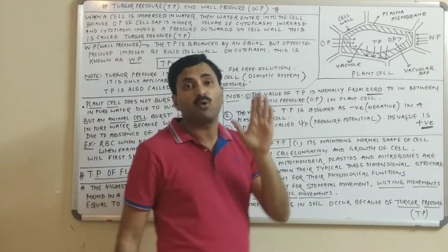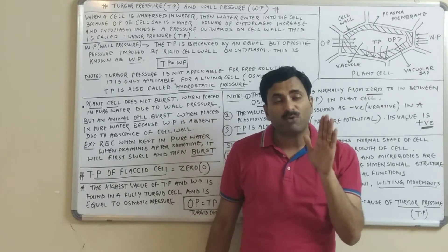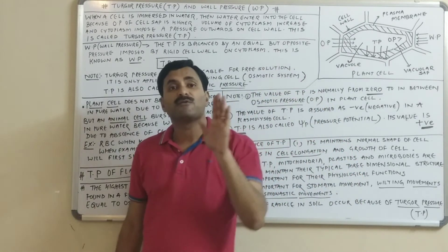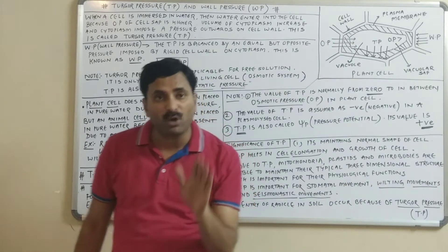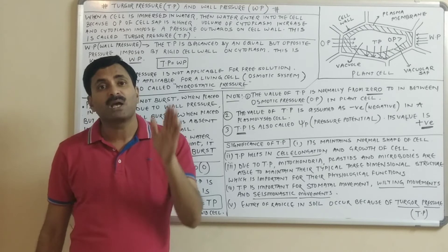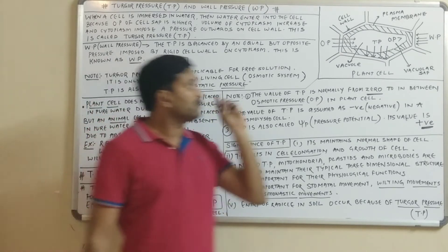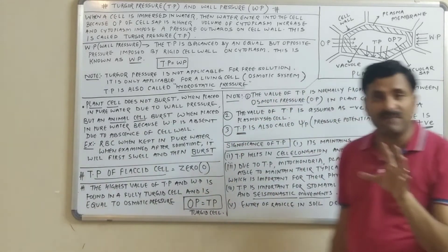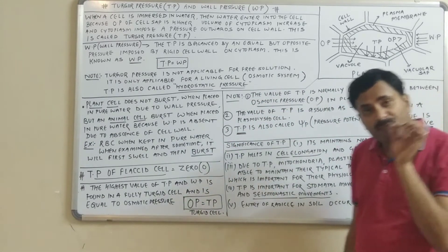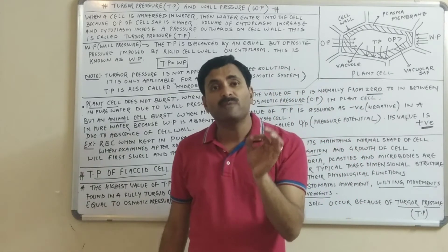We have already studied that water always moves from low OP to high OP — this is the osmotic rule. So when a plant cell is kept in pure water, water will move from outside to inside the cell.